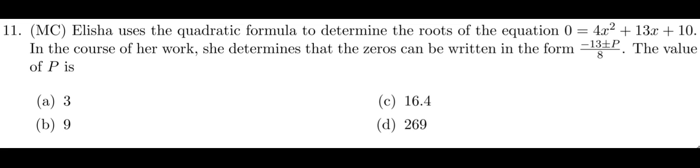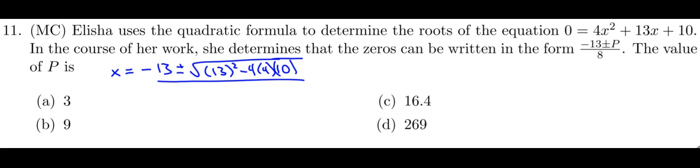Okay, so we just got to dive in and start solving this. We are using the quadratic formula. So it will be the negative of the b value, and I can see that already in her answer, plus or minus the square root of 13 squared minus 4 times 4 times 10, all over 2 times 4. And there's the 8 in the denominator there.